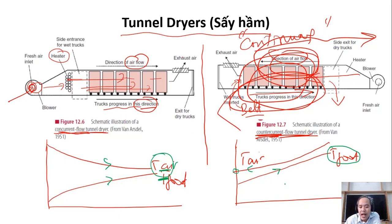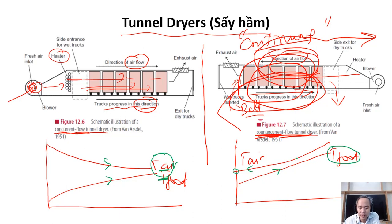In counter-current, the air and food move in opposite directions, which means counter-current has better energy efficiency. More energy is transferred to the food, and more energy is used for evaporation and removing water. So in terms of energy, counter-current is better.